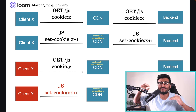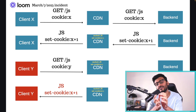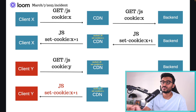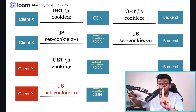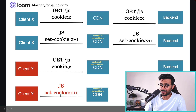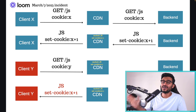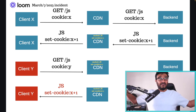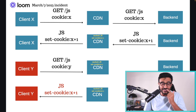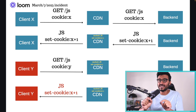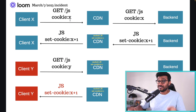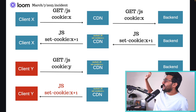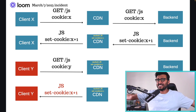The CDN doesn't even talk to the backend — it only looks at the request parameters, not the headers, to identify the cached resource. It just sees 'GET /js' and serves the cached response, which includes both the JavaScript and the cached Set-Cookie header set to X+1. That Set-Cookie tells Client Y to replace its cookie with Client X's cookie. Client Y just does it — clients follow what the server says. All subsequent requests from Client Y now use Client X's cookie.